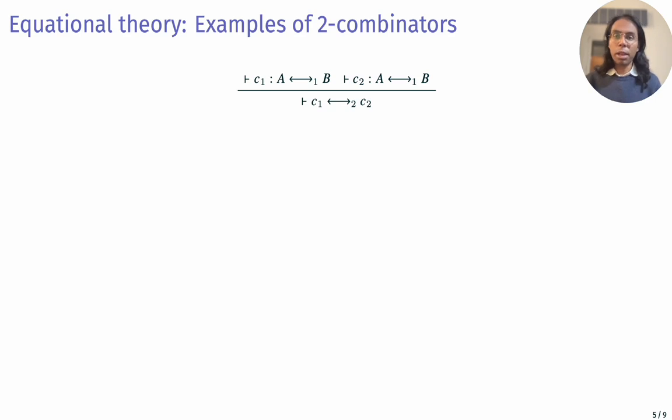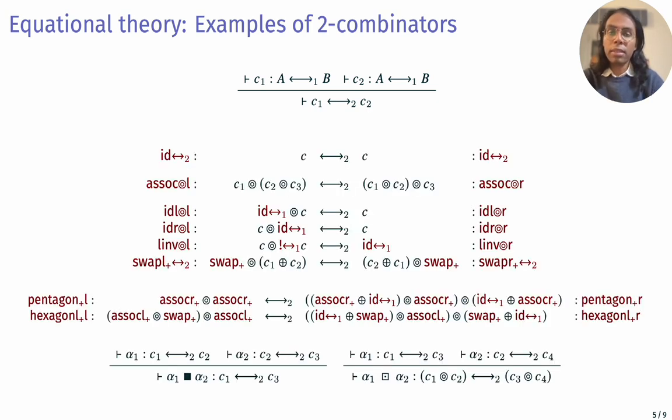Just like the simply typed lambda calculus has an equational theory given by the beta-eta equations, we would like to find an equational theory for this language of reversible programs. We will define two combinators given two 1 combinators between types A and B. Carat and Sabry conjectured that these equations are given by the coherence conditions of symmetric rig groupoids. For example, we have associativity of composition, units, naturality of swap, and so on.